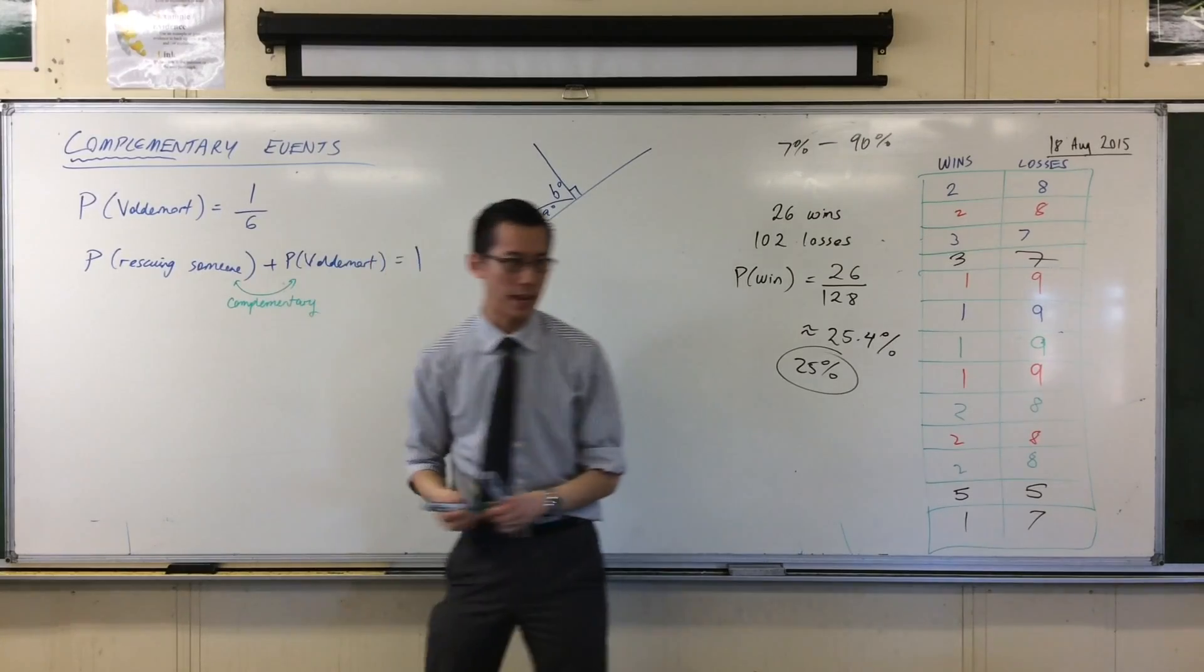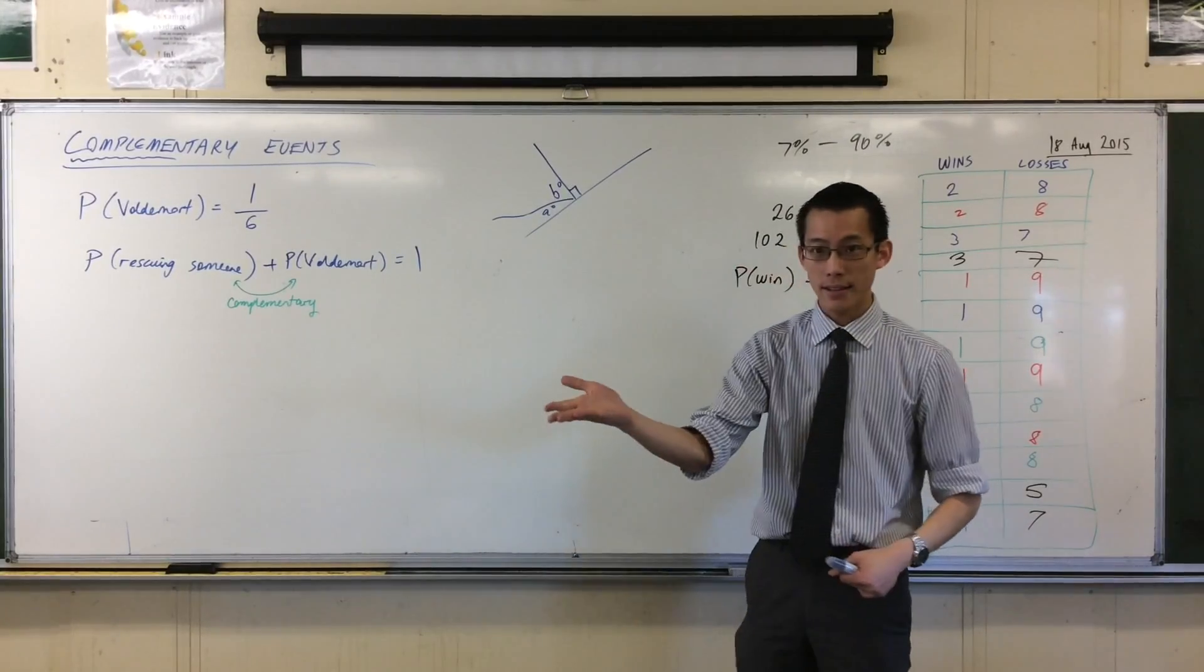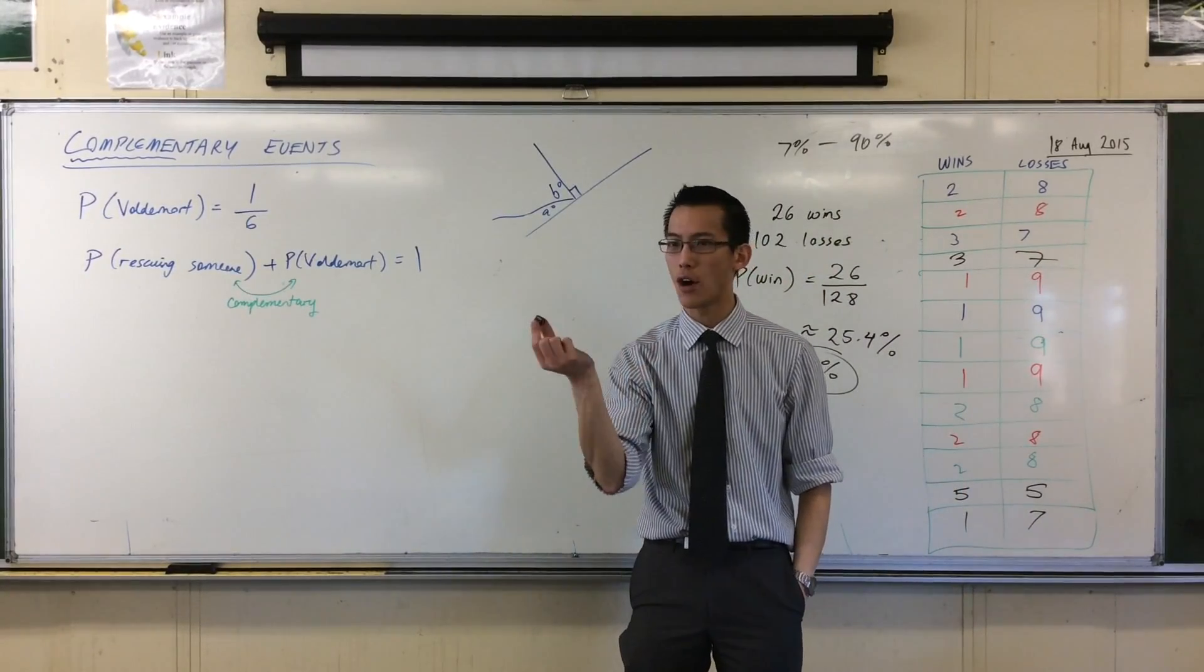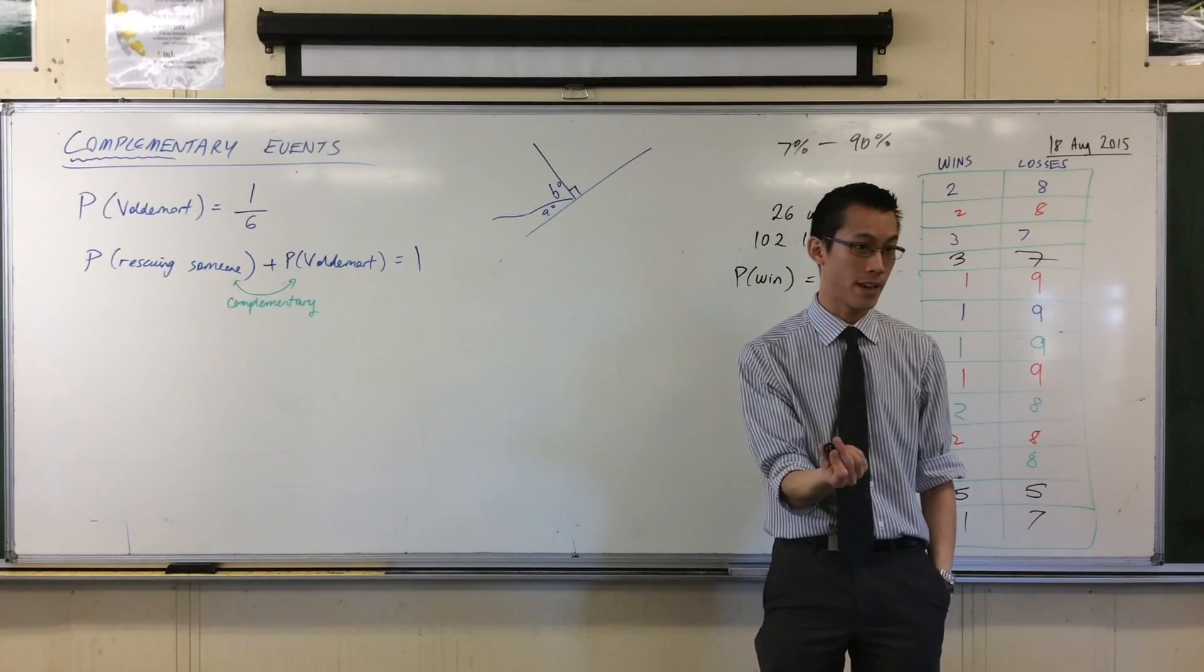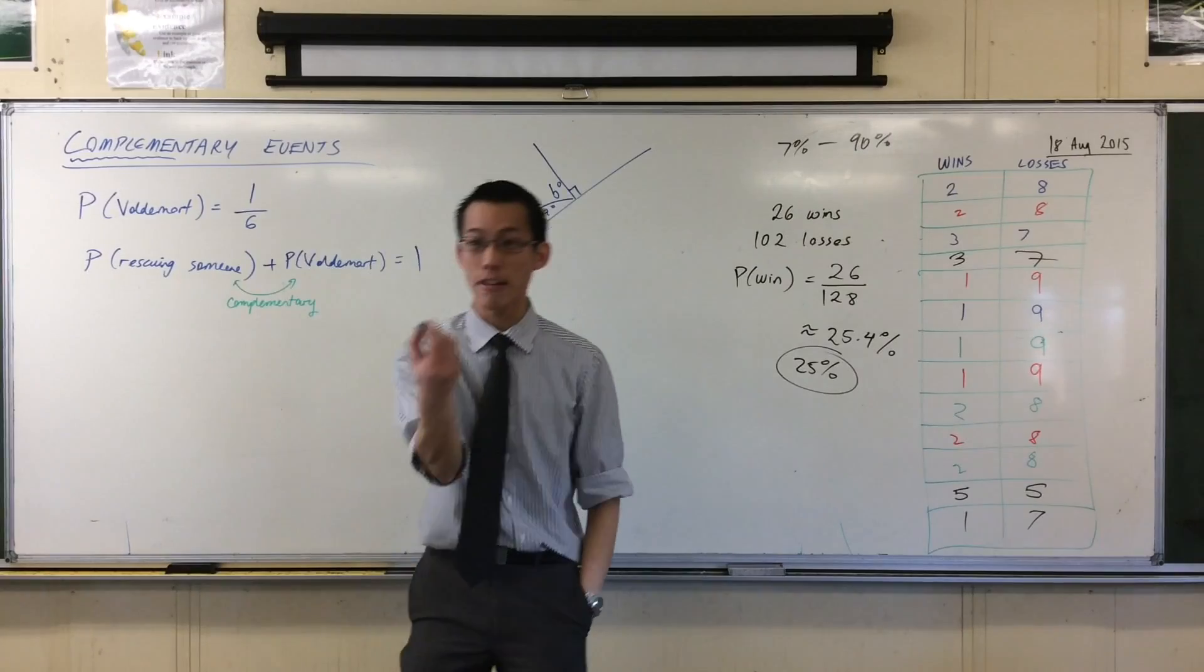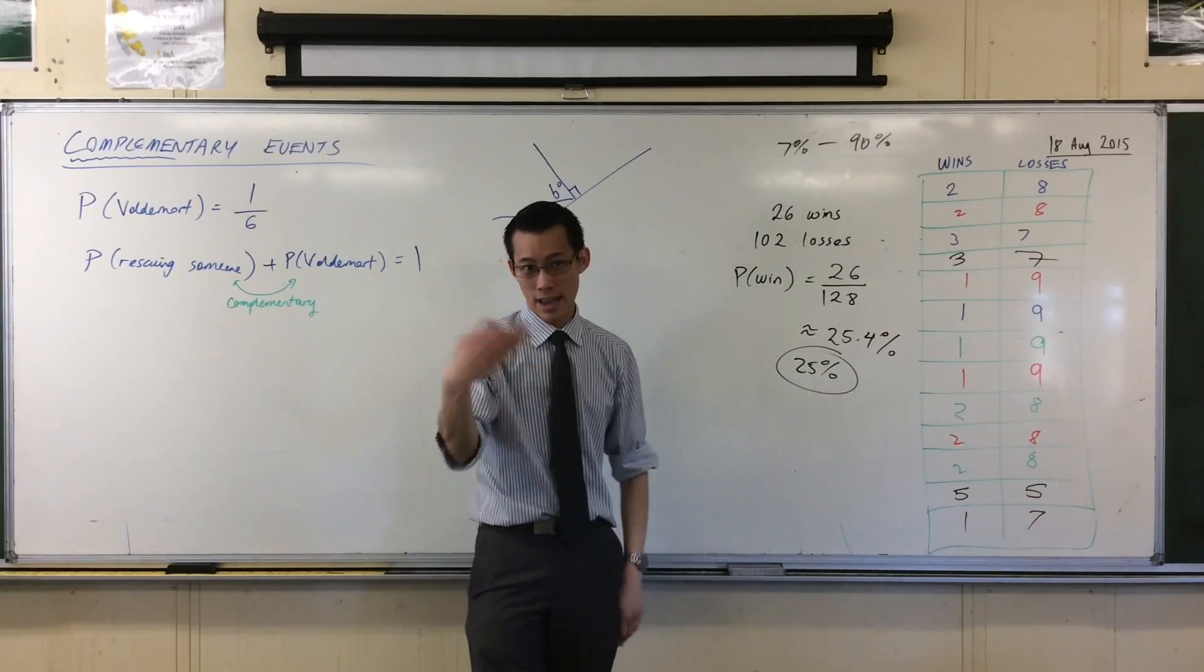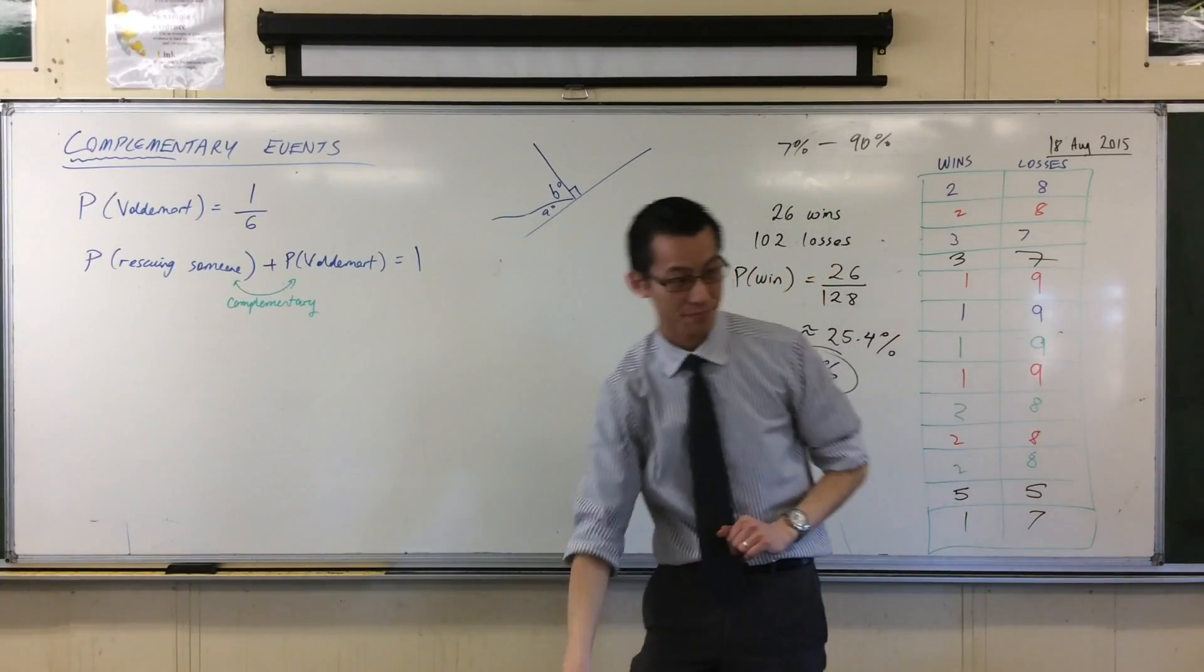They're complementary because one or the other must happen. Going back to flipping coins, heads and tails are complementary events. Now come back to the diagram. Let's think of rolling a 5 or rolling a 6. Rolling a 5 or rolling a 6 are not complementary events. They are different, but they're not complementary because I could just roll and get a 3. Getting a 5 or a 6 is not certain, it's just part of it. For it to be complementary, it's heads or tails, Voldemort or rescuing someone.